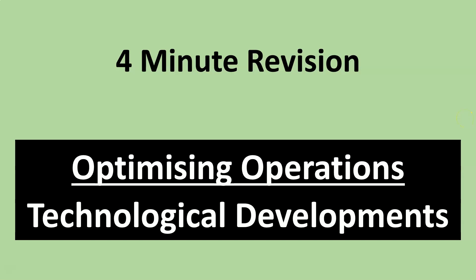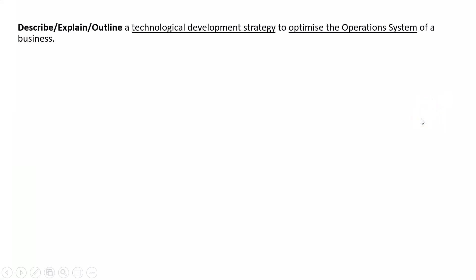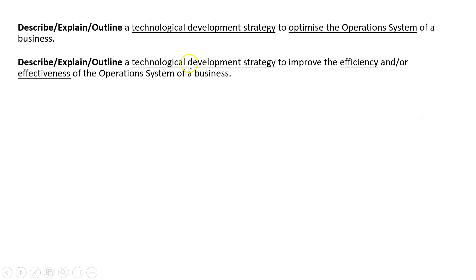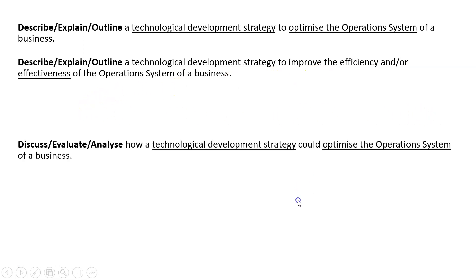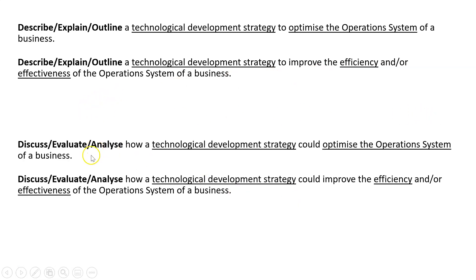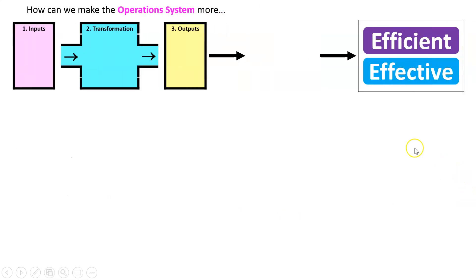There are four technological development strategies to remember to optimize operations. Possible exam questions could ask you to describe, explain or outline a technological development strategy to optimize operations, or to improve the efficiency and/or effectiveness of the operations system, or to discuss, evaluate or analyze how they optimize and/or improve efficiency or effectiveness. Basically the same question.